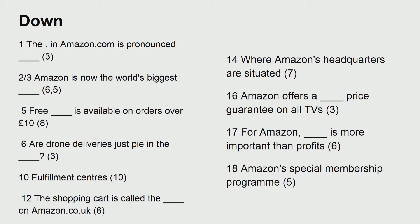Clues down. Number 1: the dot in Amazon.com is pronounced — three letters. 3: Amazon is now the world's biggest — number 5; free dash is available on orders over a certain amount, eight letters. 6: our drones — a drone delivery is just pie in the dash, three letters. 10: fulfillment centers. 12: the shopping cart is called the dash of Amazon dot — six letters. 14: where Amazon's headquarters are situated, seven letters. 16: Amazon offers a dash price guarantee on all TVs. 17: for Amazon, dash is more important than profits. 18: Amazon's special membership program, five letters.